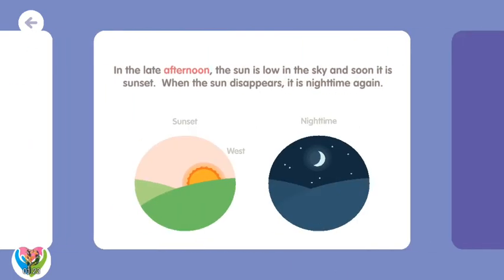In the late afternoon, the Sun is low in the sky, and soon it is sunset. When the Sun disappears, it is nighttime again.